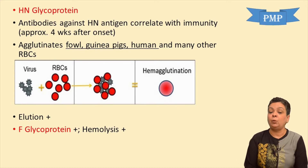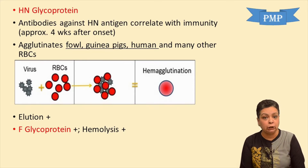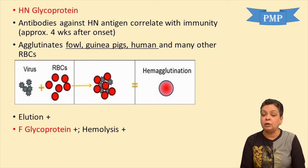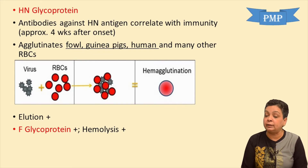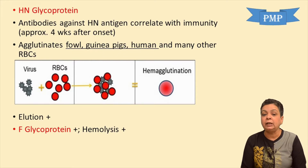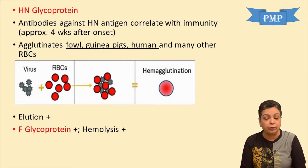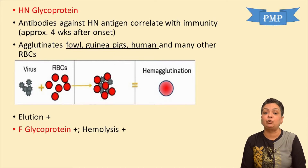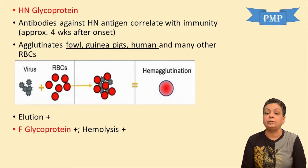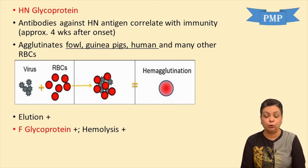When the virus is mixed with these RBCs, you can see all of them getting agglutinated to each other. Because this glycoprotein also has neuraminidase (sialidase) activity, it leads to reversal of agglutination, as the neuraminidase destroys the receptors to which the virus binds after some time. This reversal of agglutination is called elution.